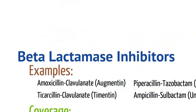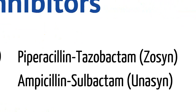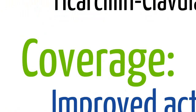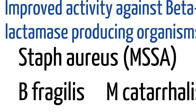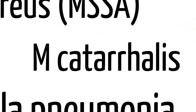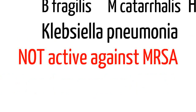Now let's look at beta-lactamase inhibitors. Examples of beta-lactamase inhibitor combinations include amoxicillin-clavulanate, otherwise known as Augmentin; ticarcillin-clavulanate, known as Timentin; piperacillin-tazobactam, known as Zosyn; and ampicillin-sulbactam, known as Unasyn. The coverage includes very good activity against beta-lactamase-producing organisms like MSSA, Bacteroides fragilis, Moraxella, Haemophilus influenzae, and Klebsiella pneumoniae. Note that beta-lactamase inhibitor combinations do not protect against methicillin-resistant Staphylococcus aureus.